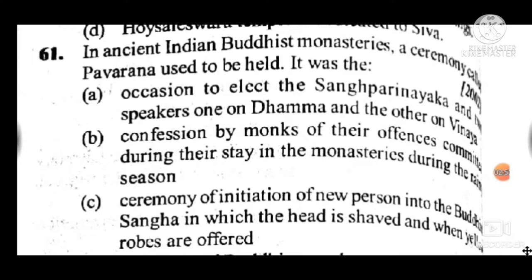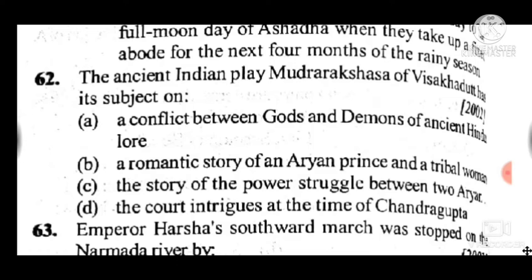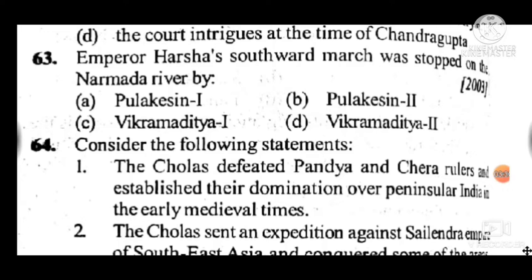Question 61: In ancient Indian Buddhist monasteries, a ceremony called Pavarana used to be held. It was — answer is B, confession by monks of their offenses committed during their stay in the monasteries during the rainy season. Question 62: The ancient Indian play Mudrarakshasa by Vishakhadatta has its subject on — answer is the court intrigue at the time of Chandragupta Maurya.